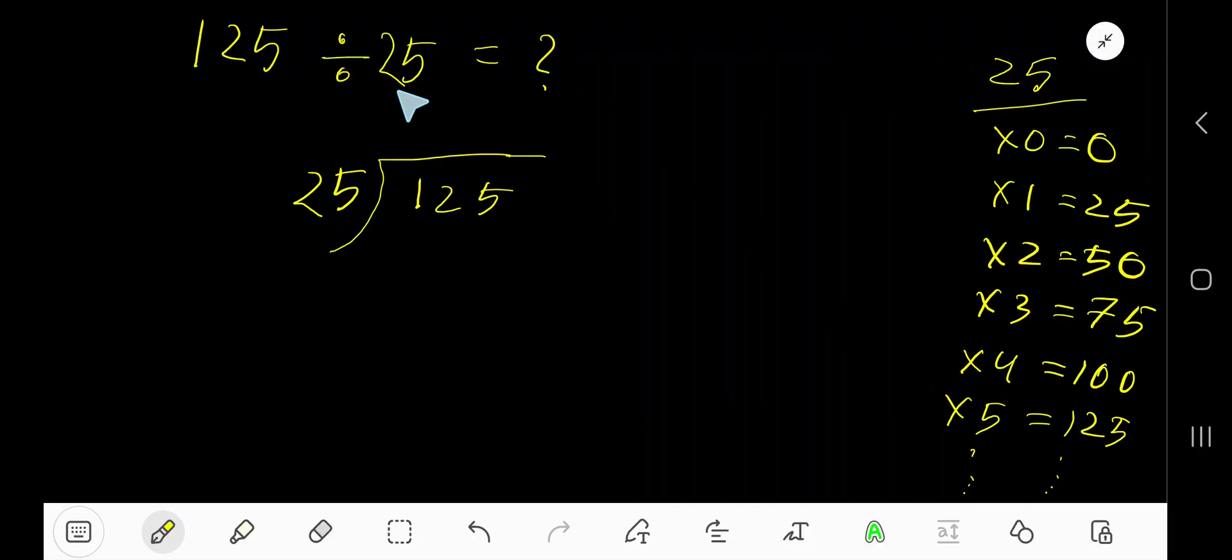125 divided by 25. Here, 25 is the divisor, so we need the multiplication table of 25: 25 times 0 is 0, 1 times 25 is 25, 2 times 25 is 50, 3 times 25 is 75. To find the multiplication table of 25 easily, just add 25 with the previous step: 0 plus 25 is 25, 25 plus 25 is 50, 50 plus 25 is 75, 75 plus 25...